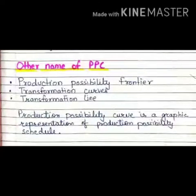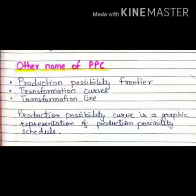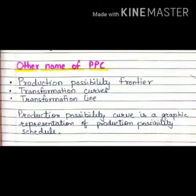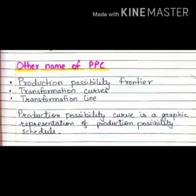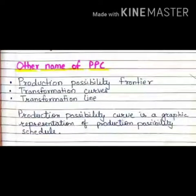Production Possibility Curve is a graphic representation of the Production Possibility Schedule. Now whatever schedule we get for the combination of two goods, how we plot that on a curve — that is called the Production Possibility Curve.